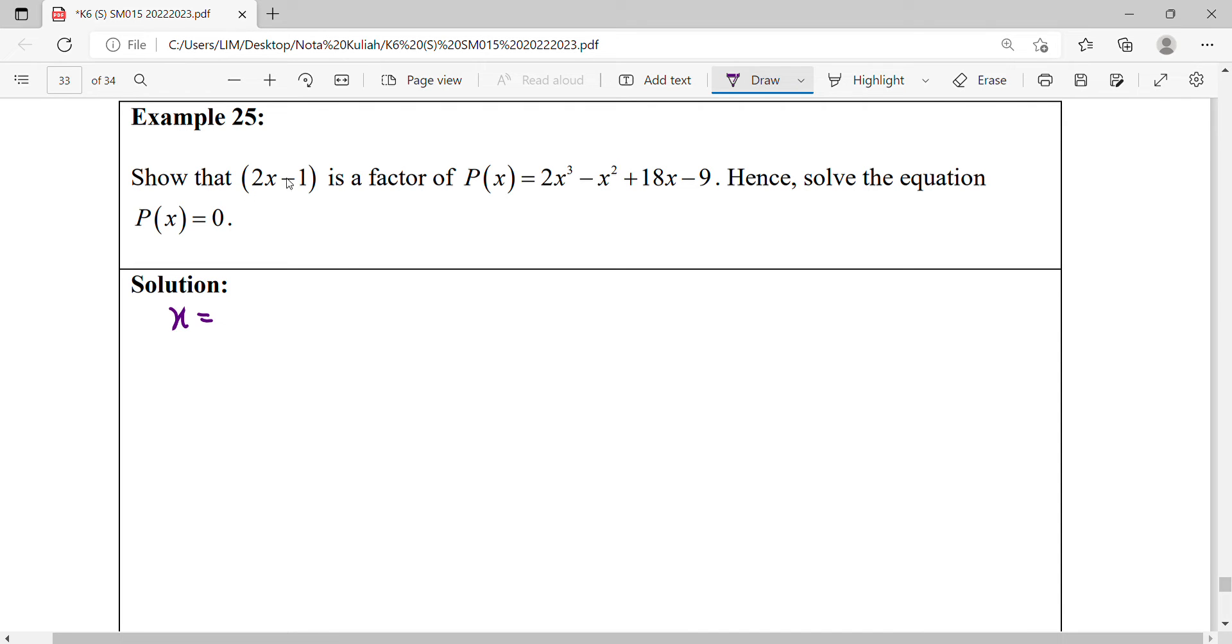The x value here is x equals 1 over 2. We substitute this into our polynomial. Notice that we get an answer or result of 0.